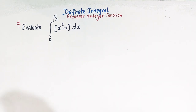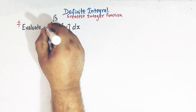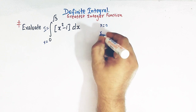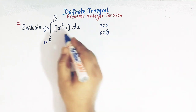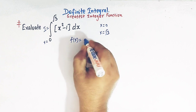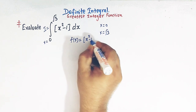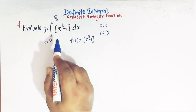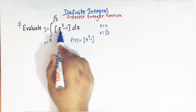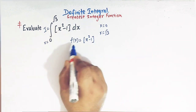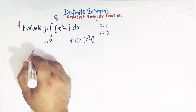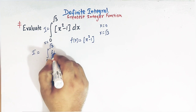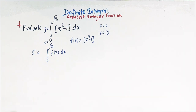Let us first call this integral as I. Here x varies from 0 to square root of 3, and let us take f(x) equal to the greatest integer of x squared minus 1. So our integral reduces to the integral from 0 to square root of 3 of f(x) dx.